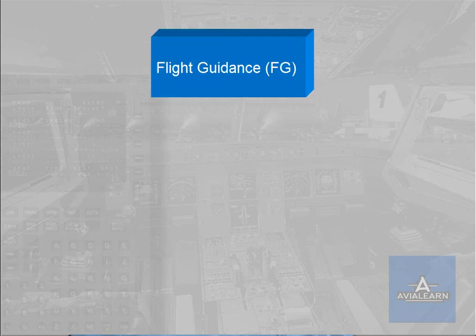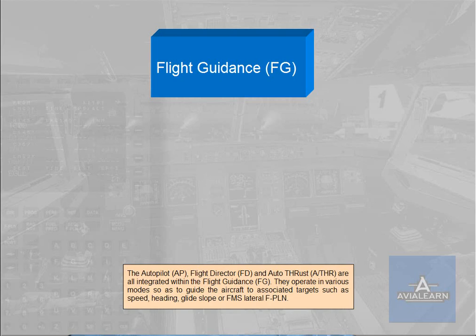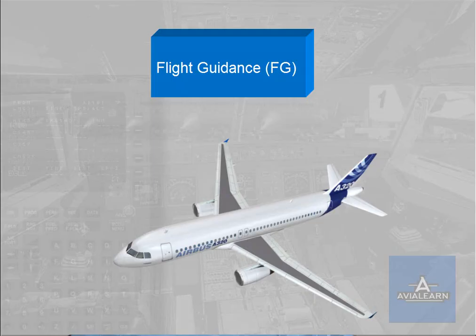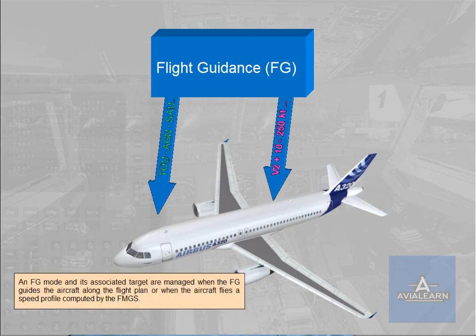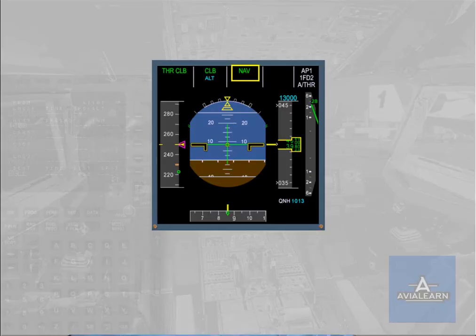An FG mode and its associated target are managed when the FG guides the aircraft along the flight plan, or when the aircraft flies a speed profile computed by the FMGS. In this example, navigation mode is the managed lateral mode which allows the FG to guide the aircraft along the lateral flight plan.